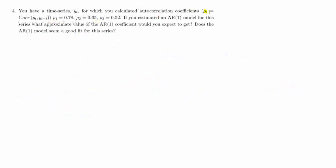The last part takes a slightly different approach. We're told that for a particular time series yt, the first-order autocorrelation is 0.78, the second-order is 0.65, and the third-order is 0.52. The question is: if we estimated an AR(1) model on this process, what would we find for the AR(1) coefficient gamma 1?